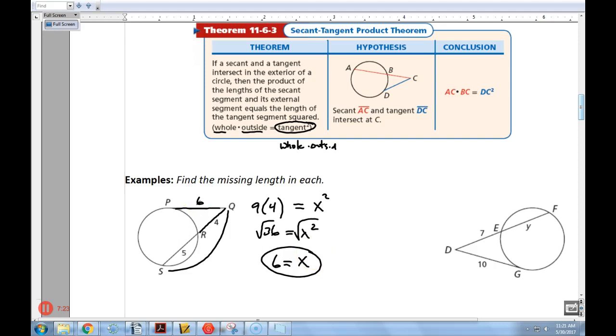Let's try this next one. We're going to do the whole, which is 7 plus Y, times the outside, which is 7. And then we're going to do the tangent squared. So we have 49 plus 7Y, I just distributed there, equals 100. Subtract 49 from both sides, you get 7Y equals 51. And this one's going to be, looks like a decimal. 7 goes into 51. That's going to be 7 and 2 sevenths. You know, or it could be a decimal if you'd like to turn it into a decimal. 7 and 2 sevenths for Y.